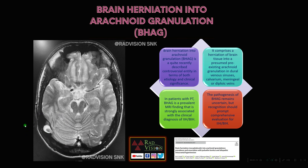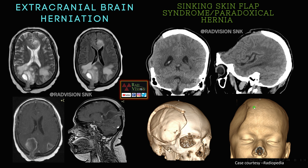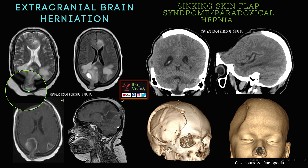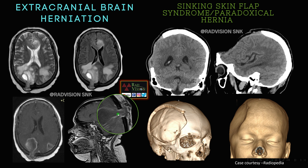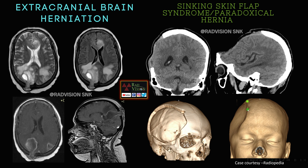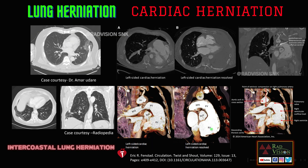Next we will see some atypical hernias. This is extracranial brain herniation — here you can see herniation of the brain tissue through a bony defect into the scalp tissues. This was a case of multifocal glioma. The other entity is when there is a craniotomy defect and there is invagination of the brain tissue through the craniotomy defect — this is called paradoxical hernia or sinking skin flap syndrome. So: this is outward displacement of the brain tissue, and this is inward displacement through the craniotomy defect.